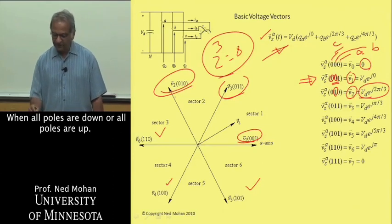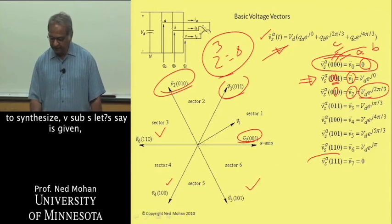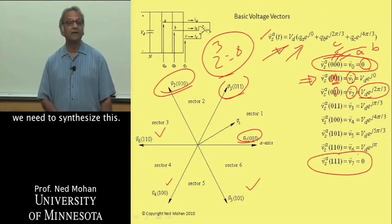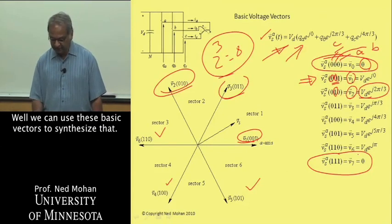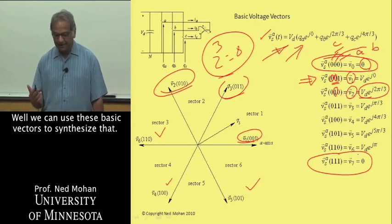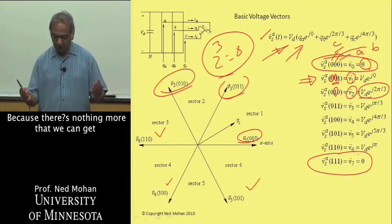In addition, when all three poles are down we get this zero vector. And similarly when all three poles are up, if we plug that into this equation here, the voltage space vector is zero. The outcome is that we have six active vectors and then we have two zero vectors when all poles are down or all poles are up.